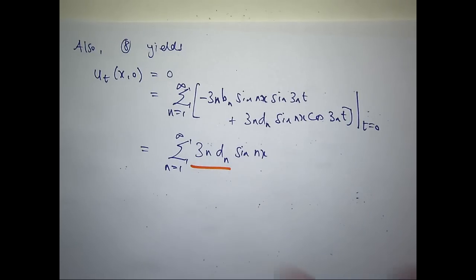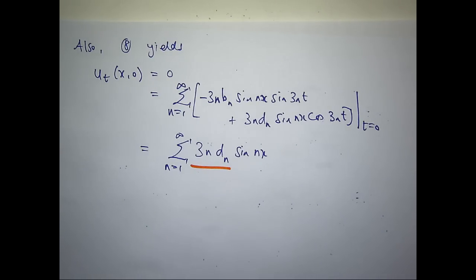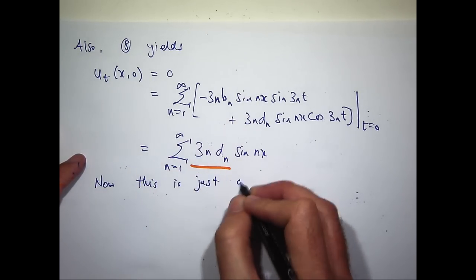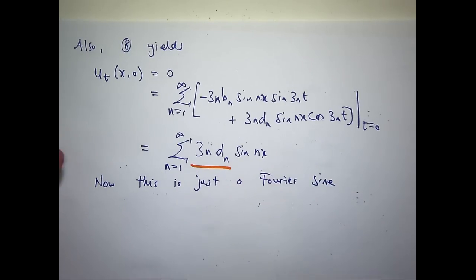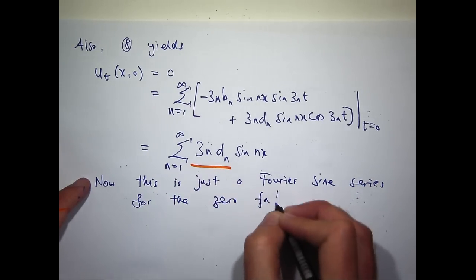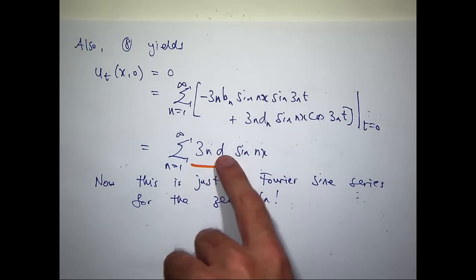Actually it's simpler than that. What's the Fourier sine series of 0? It's 0. Zero is both odd and even, so expressing it in terms of odd functions, it must all be 0. So the d sub n's can be calculated as follows: these coefficients must be 0. Obviously 3 is not 0 and n is not 0, so d sub n must be 0.